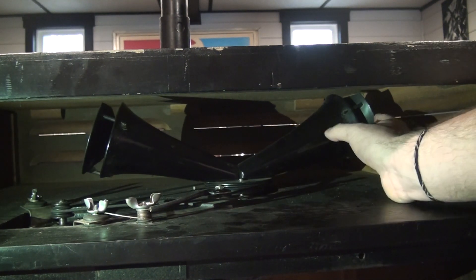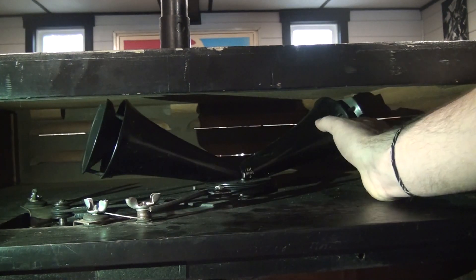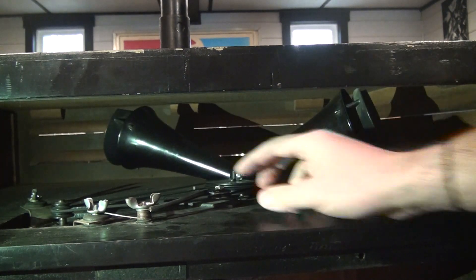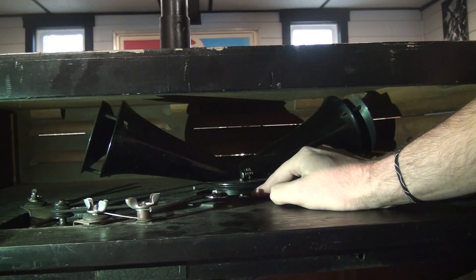Here's the top section of the Leslie 147. This is where we're going to get our spinning speaker effect or sound. So this is a horn. It is powered by this drive belt right here, which is powered by a two-speed motor. That's how you get your fast setting and your slow setting.